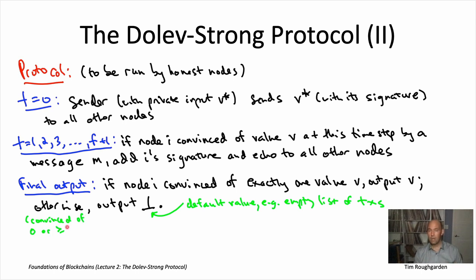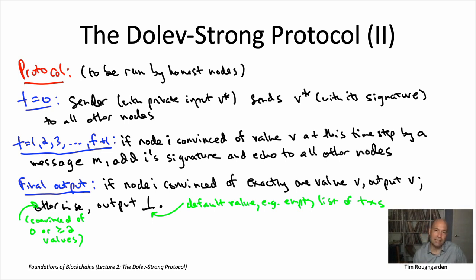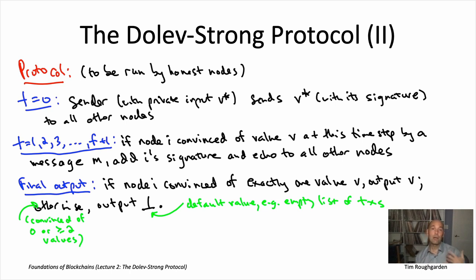If a node gets convinced of two or more values, it outputs bottom. There's also the case where a Byzantine sender could just never send anything, so a node might be convinced of no value at all — in which case it also defaults to bottom. The final case, where you're convinced of one and only one value, is where you output that value. That is the description of the Dolev-Strong protocol. When f equals one, it becomes somewhat similar to the last protocol we looked at — though that one used a majority vote, while here you're either uniquely convinced of a value and output it, or output a canonical default. But this is well-defined for any value of f, with one additional round per faulty node tolerated.